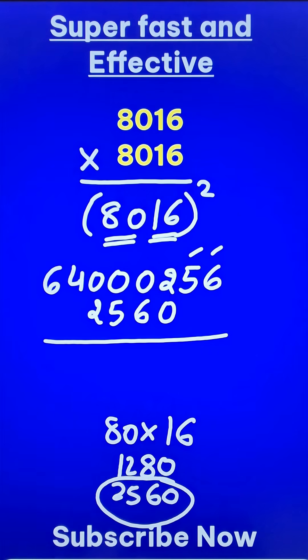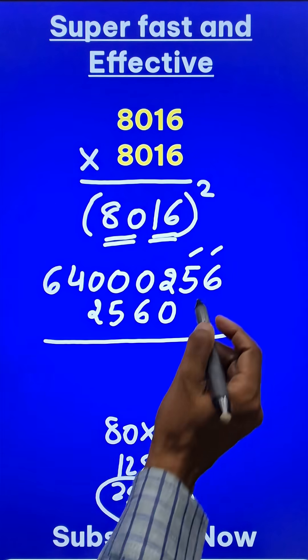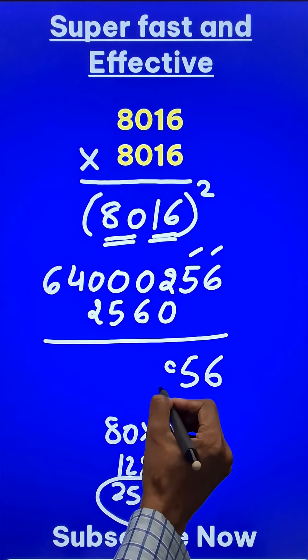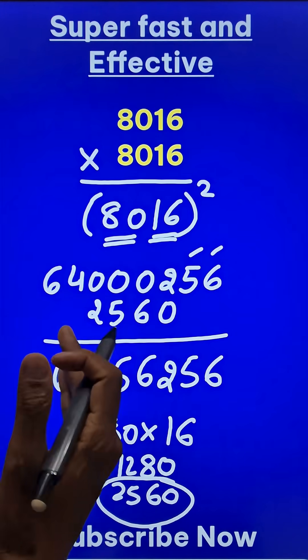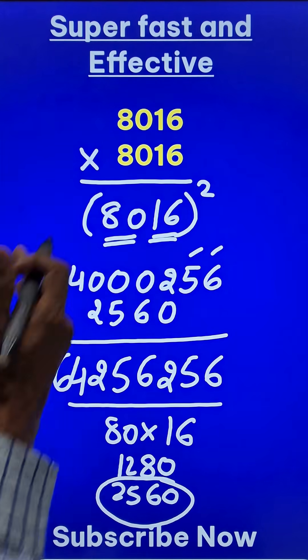And just add vertically, you will see the mathemagic here. 64256256. Is that the square of 8016?